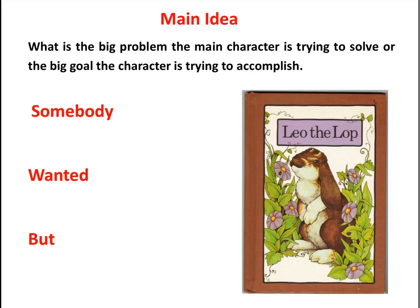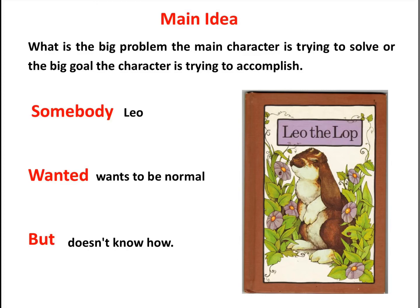Next, there's the wanted — what is it that the character really wants in the whole story? That wanted can be a problem they're trying to solve or a goal they're trying to accomplish. And then finally there's the but — what is the problem that character has in getting their goal? To do that, we're going to look at Leo the Lop. In the story, the main character was Leo, the bunny rabbit who was kind of insecure. The thing he wanted was to be normal. But the problem was he didn't know how. So putting these three things together: Leo wants to be normal, but he doesn't know how.